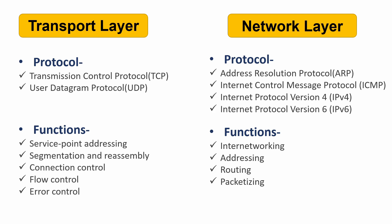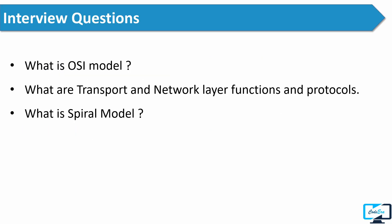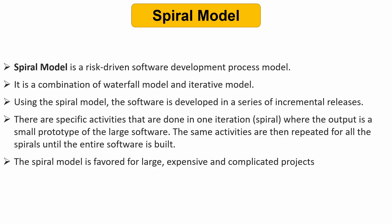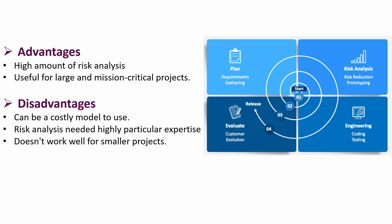Finally, the interviewer asked him what is the spiral model. The spiral model is a risk-driven software development process model and it is a combination of the waterfall model and the iterative model. Using the spiral model, software is developed in a series of incremental releases. In this model there are specific activities done in one iteration where the output is a small prototype of the large software. The same activities are then repeated for all the spirals until the entire software is built. The spiral model is favored for large, expensive, and complicated projects. You can also mention some advantages and disadvantages of the spiral model.